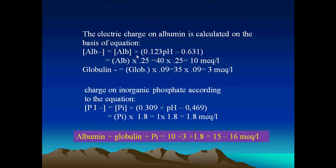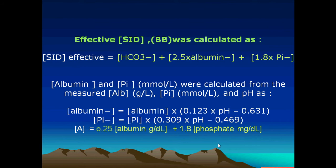When we calculate these weak acids as charges rather than moles: albumin has a charge that varies with pH, and the formula gives albumin multiplied by 0.25 — so at 40 g/L, albumin contributes about 10 mEq/L. Globulins are multiplied by 0.09, giving about 3 mEq/L. Inorganic phosphate is multiplied by 1.8. When you sum albumin, globulins, and inorganic phosphate, they total approximately 15–16 mEq/L. These constitute the total weak acids, also called the effective buffer base.